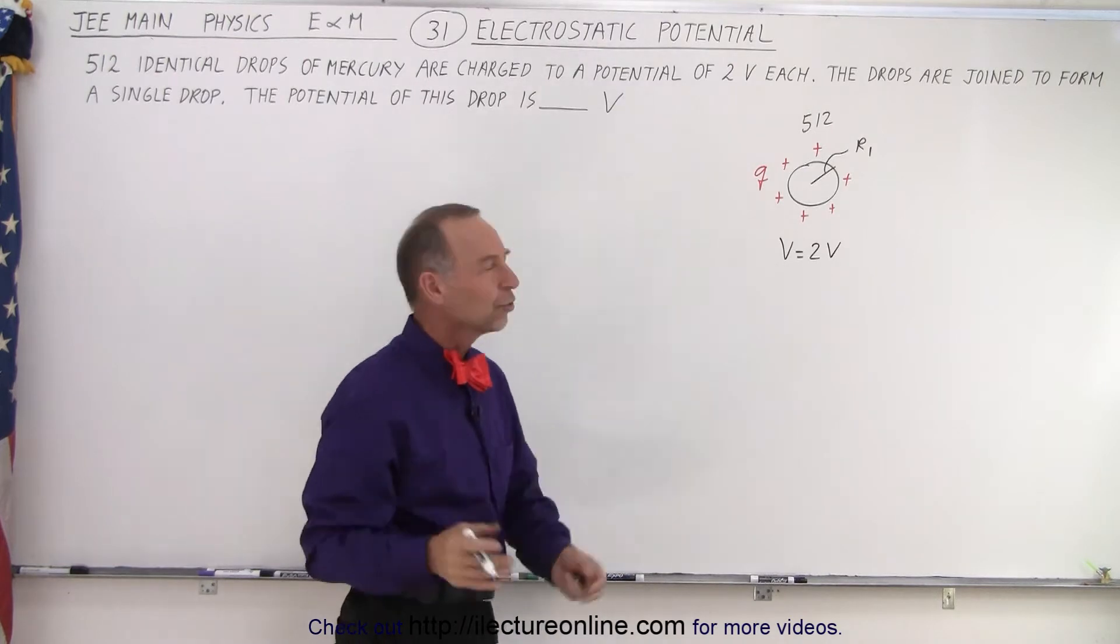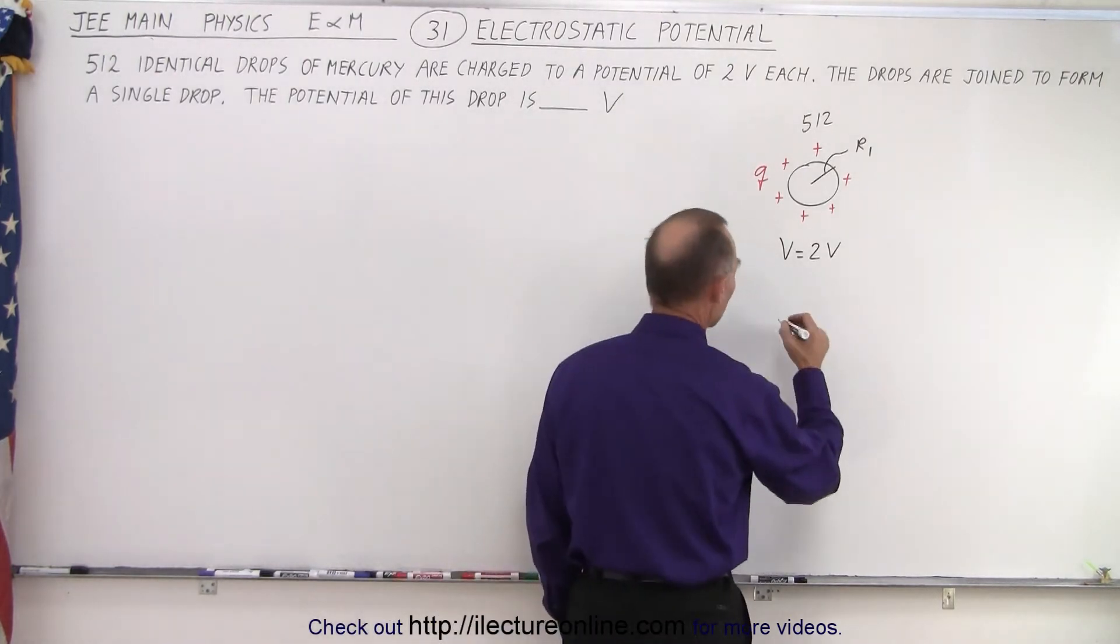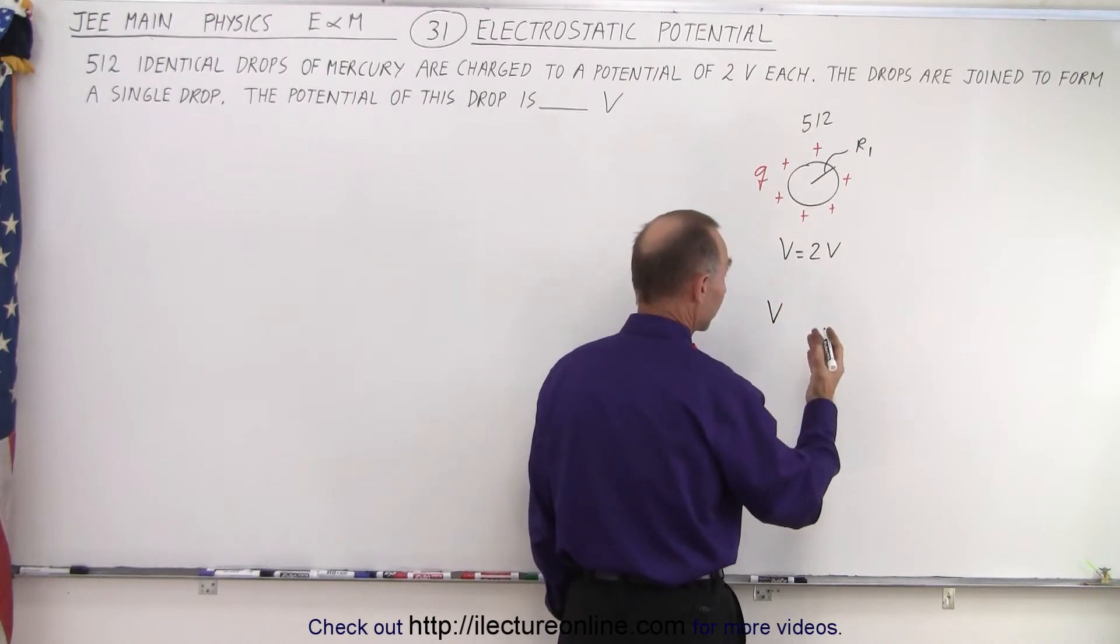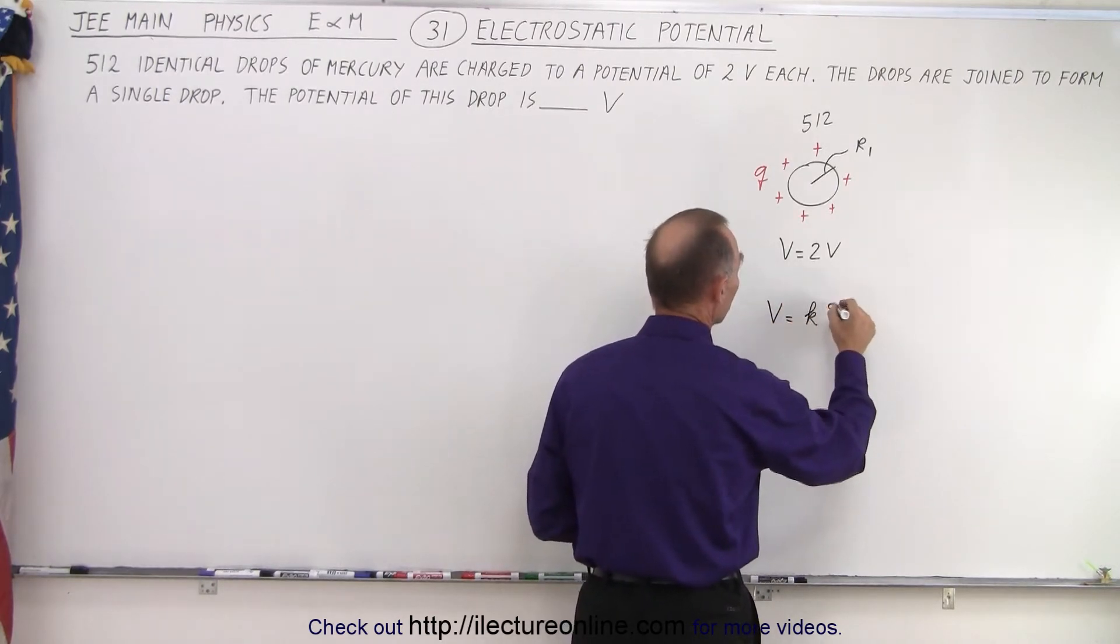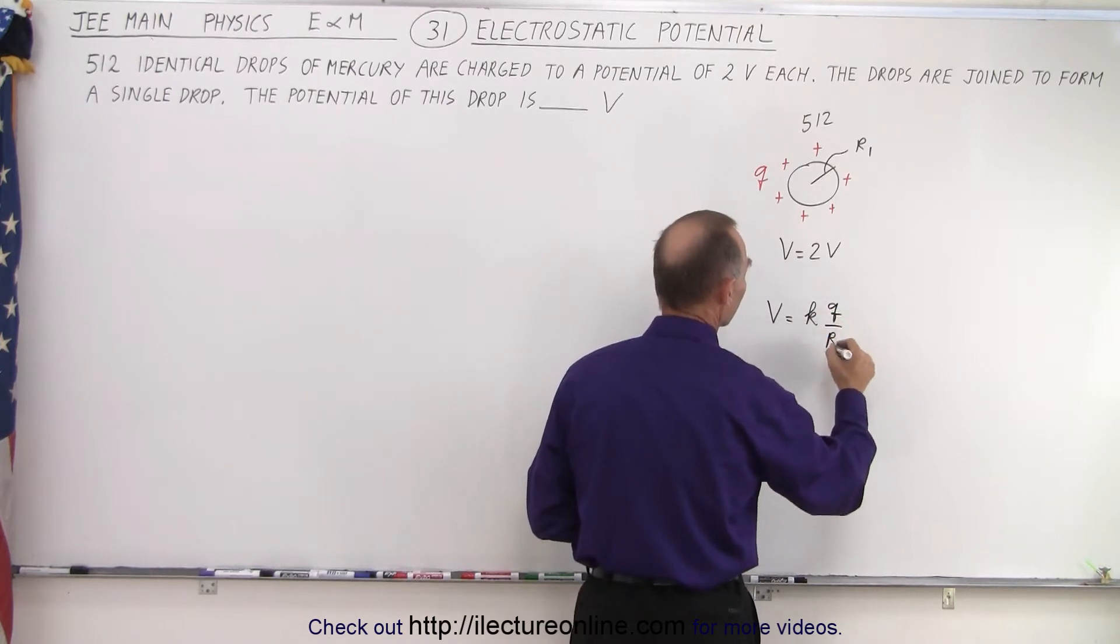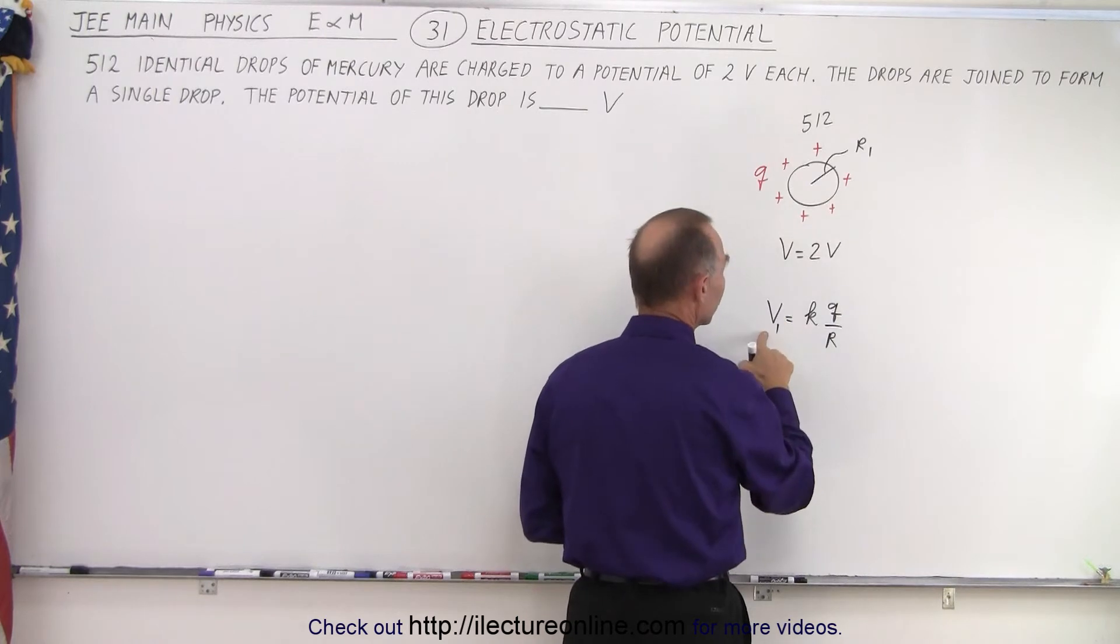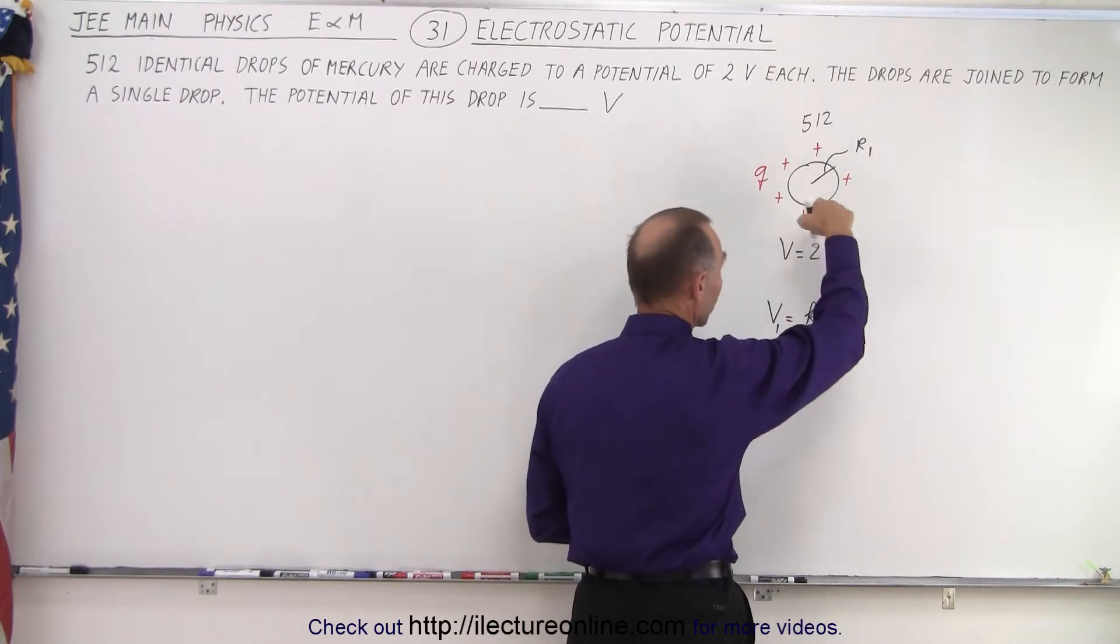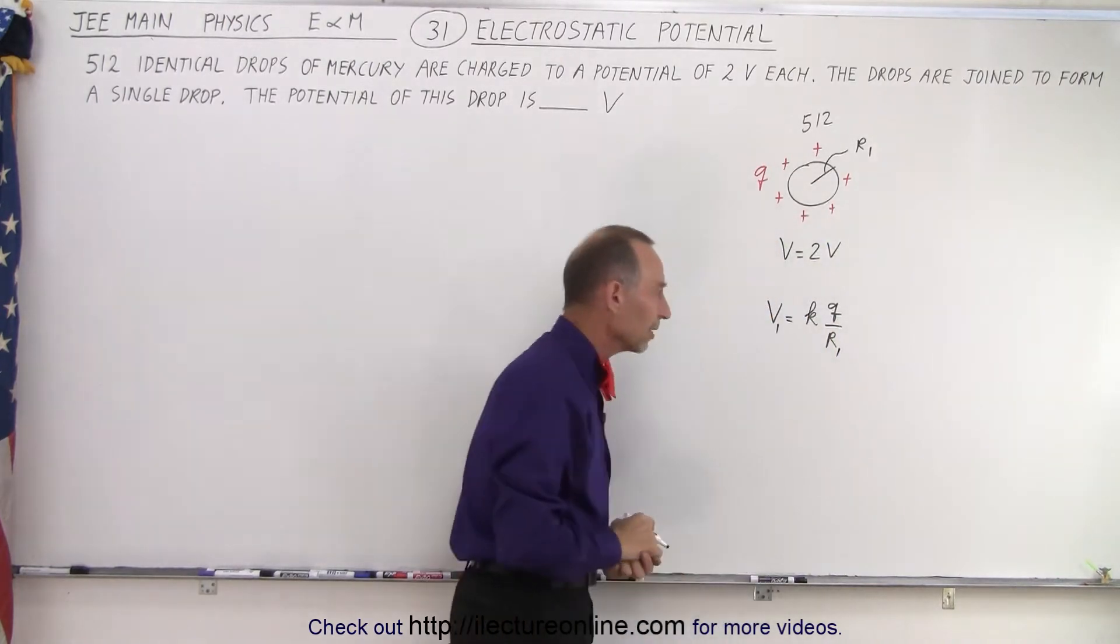Now, what equation do we need for that? Well, it turns out that the electrostatic potential for a charge is equal to KQ divided by R. So in this case, the voltage for one of these mercury spheres with radius R1 would be K times Q, the charge on the mercury, divided by the radius.